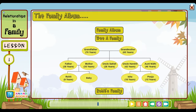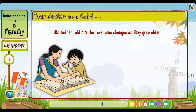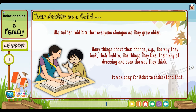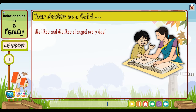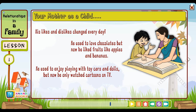Rohit saw some photographs of his mother as a young girl. He was surprised to see how his mother had changed. His mother told him that everyone changes as they grow older — the way they look, their habits, the things they like, their way of dressing and even the way they think. It was easy for Rohit to understand that his likes and dislikes changed every day. He used to love chocolates but now he liked fruits like apples and bananas. He used to enjoy playing with toy cars and dolls but now he only watched cartoons on TV.